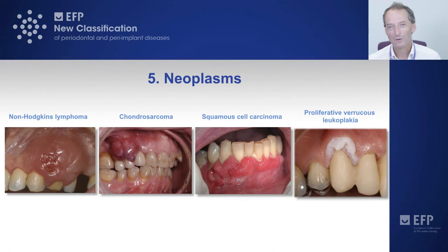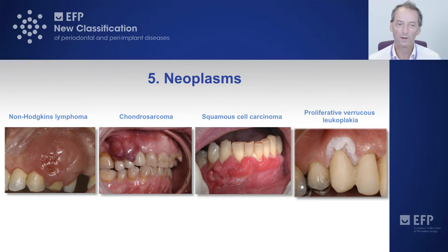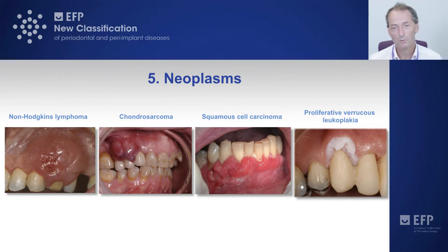Neoplastic conditions are obviously life-threatening, and early diagnosis is critically important for patient survival. On the left is a non-Hodgkin's lymphoma. The swelling exceeds the mucogingival line, so this cannot be a plaque-induced lesion. It's really important to physically palpate these lesions because malignant tumours feel very hard and rubbery — known as induration — which is a very important sign. There is also ulceration in the middle of the lymphoma, as the tumour is outgrowing its blood supply and causing necrosis at the centre.